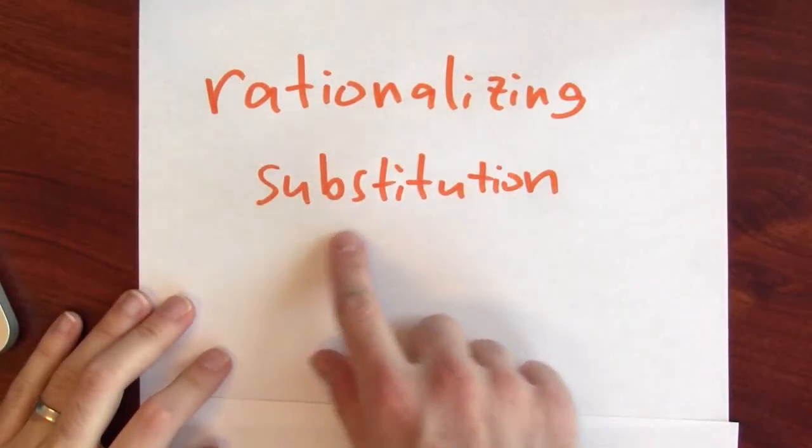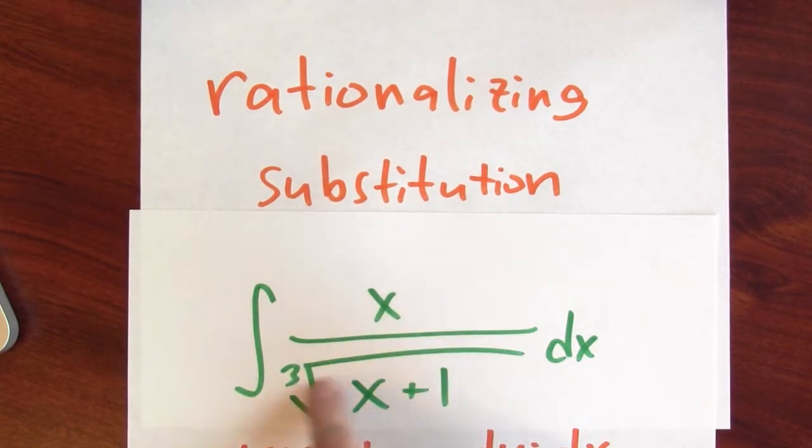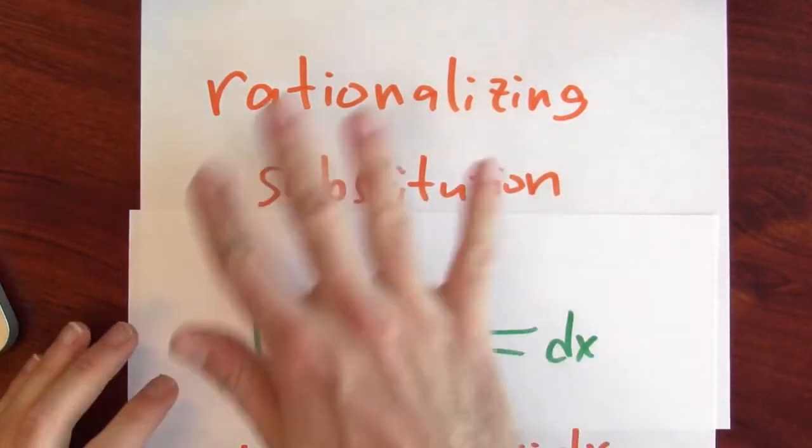To make it easy to talk about this particular technique, it has a name. The rationalizing substitution. The original problem had a cube root in it, but I made a substitution to get rid of the radical, of rationalizing.